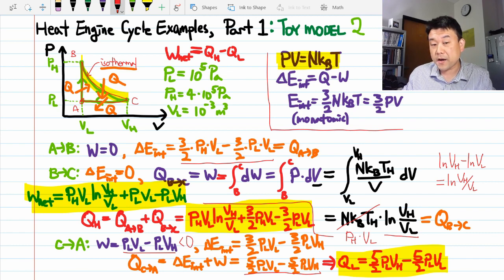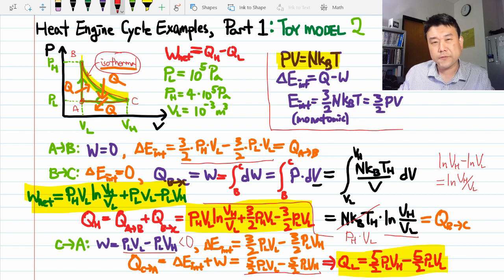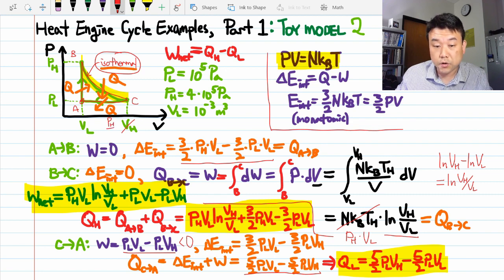So, the low volume point should be similar. So, 1 liter or 10 to minus 3 cubic meter. And as it turns out, because we specified this process to be isothermal, we don't actually have a freedom to pick our high volume point. This has to be pH over PL times VL. So, our high volume point has to be 4 liters.